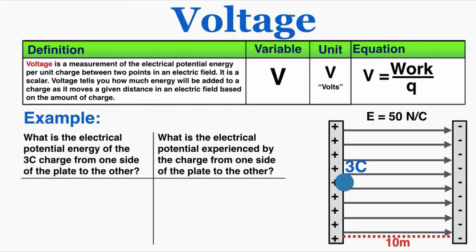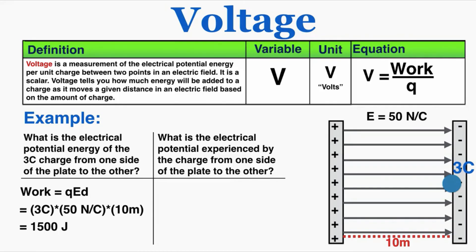As an example, consider a 3-coulomb charge moving from one side of the plate to the other. We can ask: what is the electrical potential energy, and what is the electrical potential? These look similar but are very different. Electrical potential energy is the work done on the charge: force times distance equals charge times field times distance, which comes out to 1,500 joules. Electrical potential, on the other hand, is the work per charge — the voltage — which equals the electric field times the distance, giving 500 volts. Watch out for that very slight difference in wording when solving voltage problems.